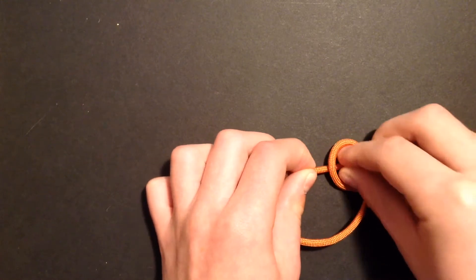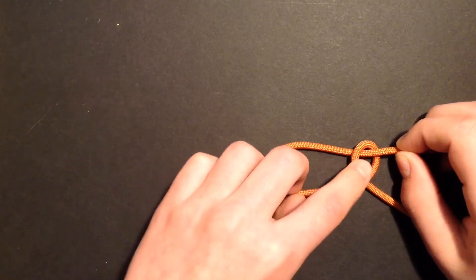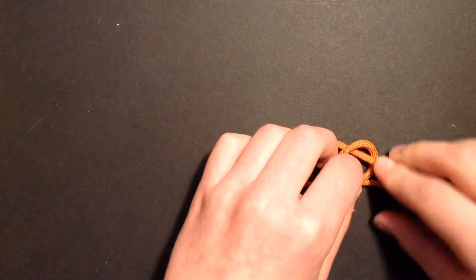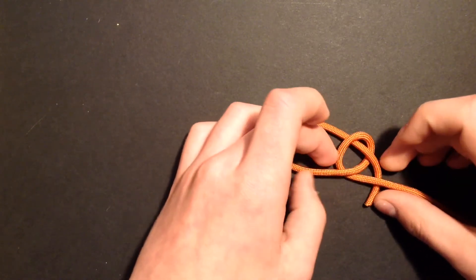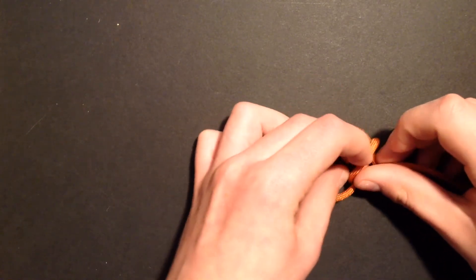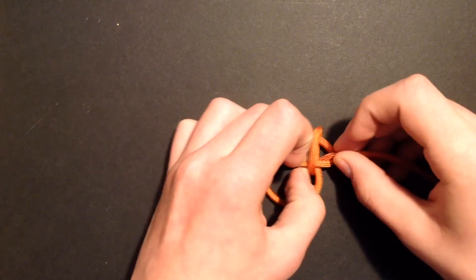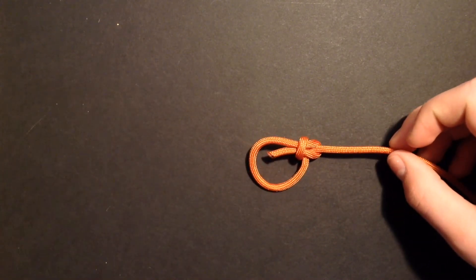Then, you can do all the steps that were done before. Put the running end through the loop, around the standing end, and back into the loop. And that is how to correctly tie your bowline.